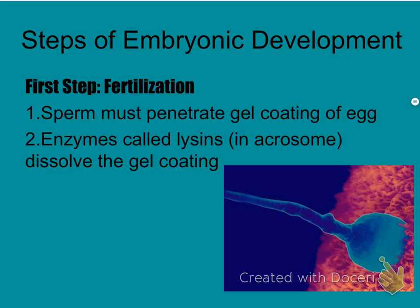There are steps in embryonic development. The first step is fertilization — the sperm has to penetrate the egg. There's a gel coating on the egg, and the enzymes we discussed in the sperm cell diagram dissolve this gel coating. Whichever sperm gets there first starts trying to dissolve the coating to get into the egg cell. And as we'll find out, once one sperm gets in, lots of changes occur very quickly.